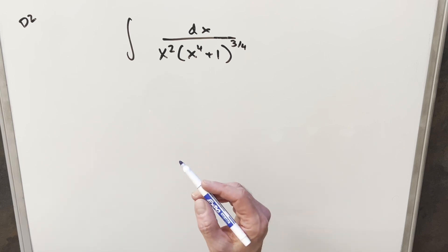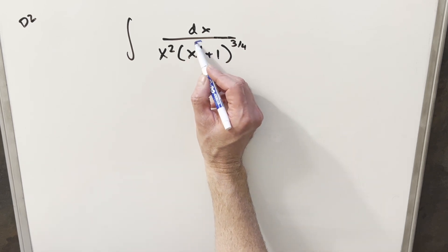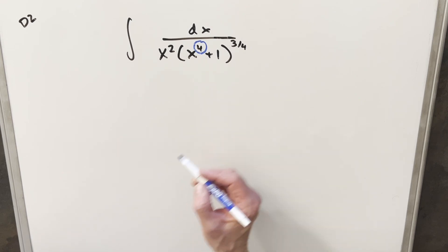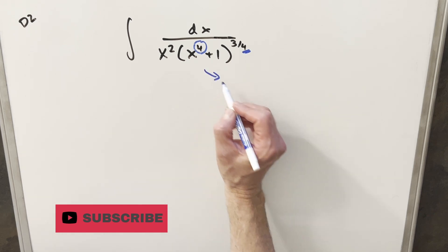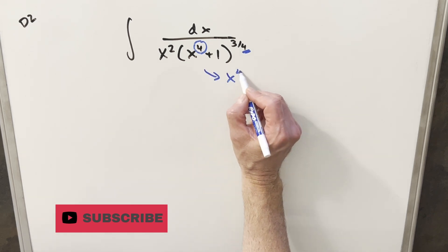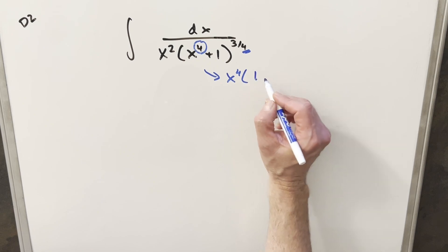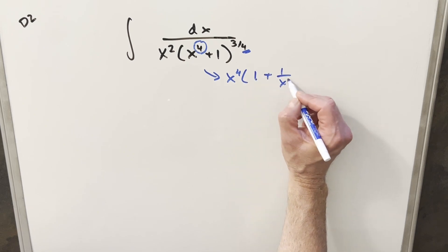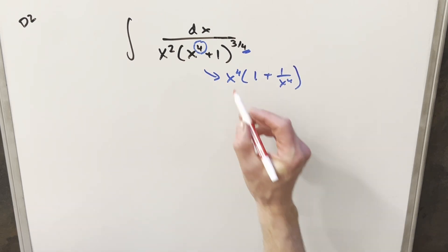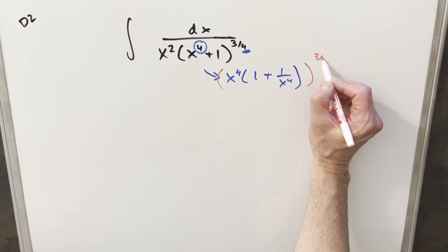So then after messing with that, what I found was just notice that we have a 4th power on the x here and this is 3 4ths power. So actually if I factored out an x to the 4th, this might work out. So if I factor this like x to the 4th times 1 plus 1 over x to the 4th and then this whole thing is to the 3 4ths power.